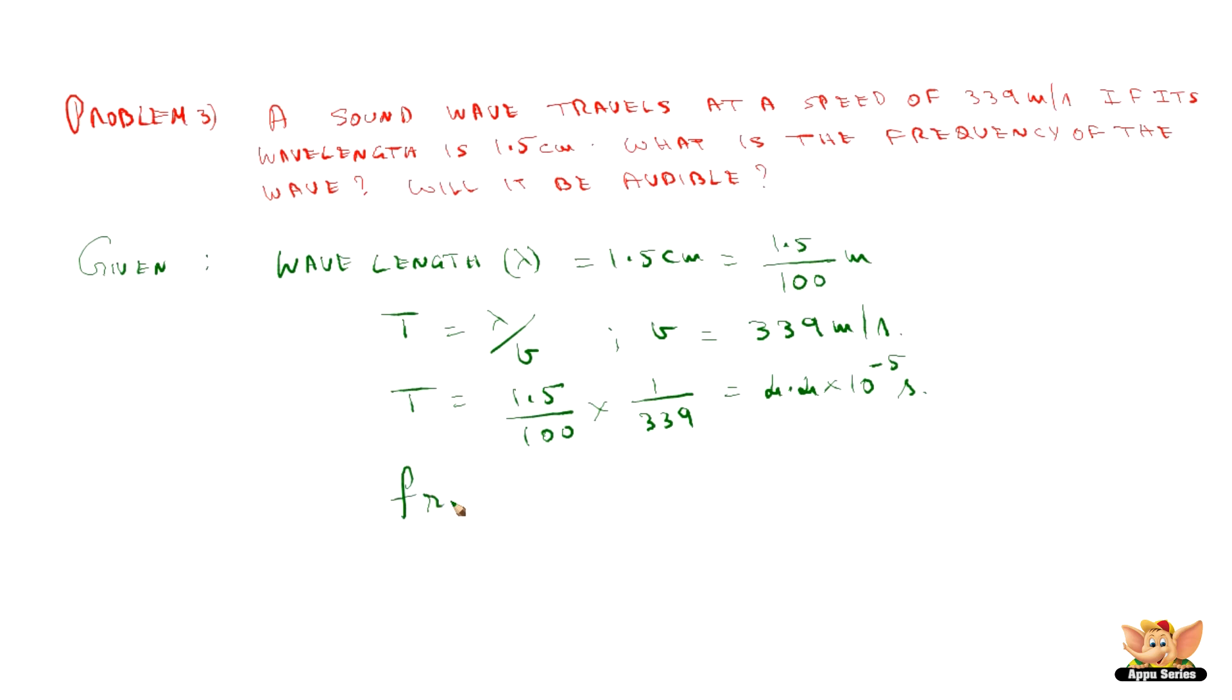Now the frequency F is nothing but inverse of T. So frequency F is equal to 1 by T. So this will be 1 by 4.4 into 10 to the power minus 5, which is nothing but 22,600 hertz.